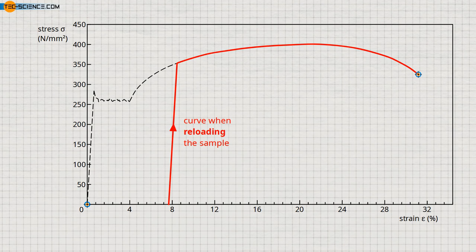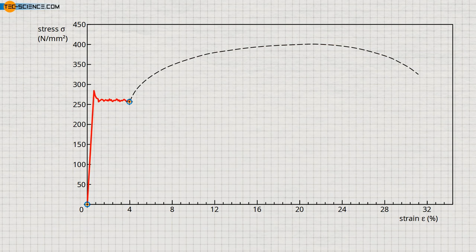Due to diffusion processes, however, foreign atom accumulations can form again over time, which lead to Cottrell atmospheres. This process is called aging. In such a case of aging, a yield-point phenomenon occurs again.